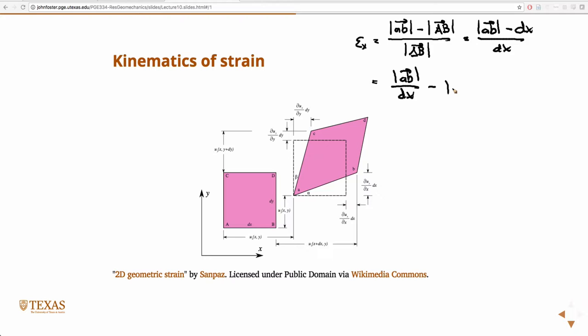So, that's partial U, partial X, it's the change in the X direction times DX, and the change in the Y direction with respect to X DX. So, that's this length and this length.